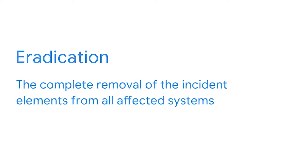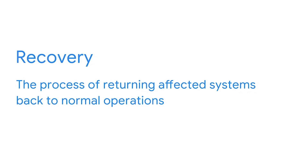Containment actions are the first step toward removing a threat from an environment. Once an incident has been contained, security teams work to remove all traces of the incident through eradication. Eradication involves the complete removal of the incident elements from all affected systems. For example, eradication actions include performing vulnerability tests and applying patches to vulnerabilities related to the threat. Finally, recovery is the process of returning affected systems back to normal operations. An incident can disrupt key business operations and services, and during recovery any services that were impacted are brought back to normal operation.